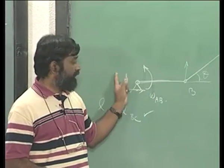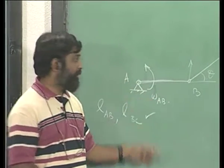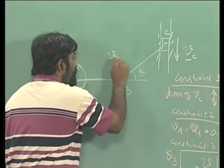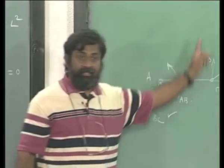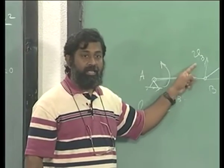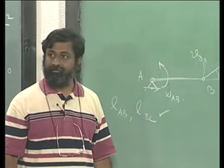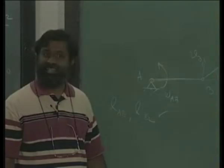Remember, if it is rotating like this with an angular velocity omega B, the velocity of Vb will be along this and the direction is omega R times this direction. Clear? It is as simple as that.